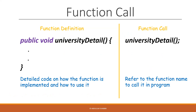Our function definition has all this information like the return type, name, and all the specific code that the function contains. But to actually run this code, we have to call the function separately from its definition. A function definition gives us the detail of what our function does and how it can be run. It shows us the code that the function contains and tells us if it's accessible or if it has a return data type. But to actually use and execute a function's code in a program, we have to call it.